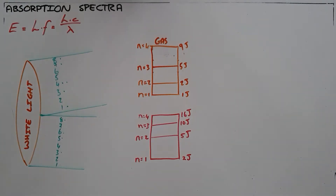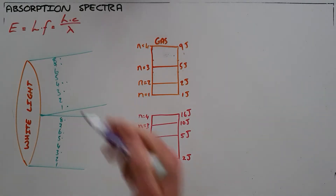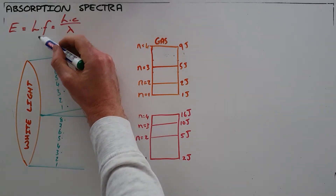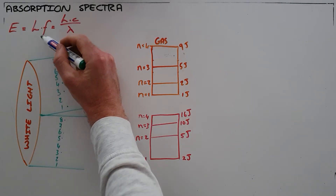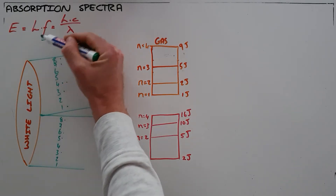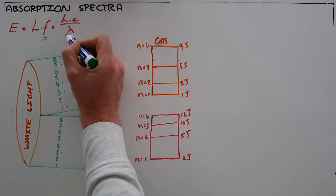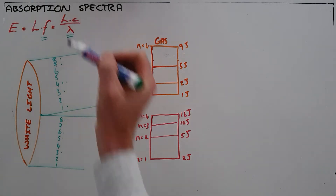We know from the photoelectric effect that light can be treated as a stream of particles, and we can calculate the energy of those particles of light known as photons either by knowing the frequency or by knowing the wavelength of that light.